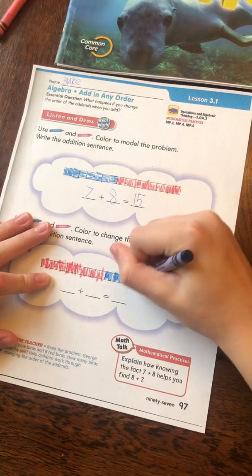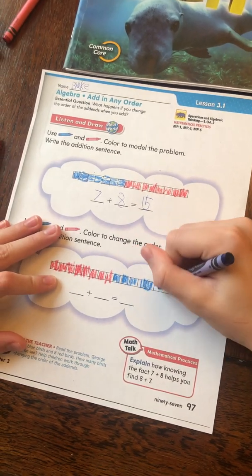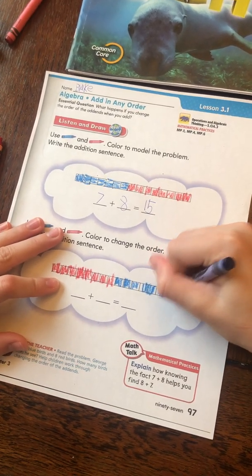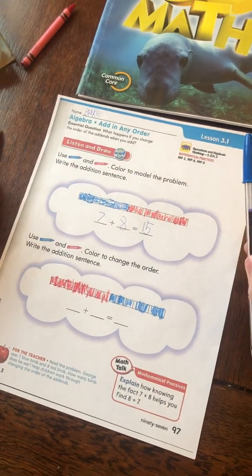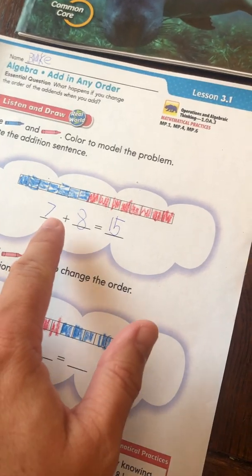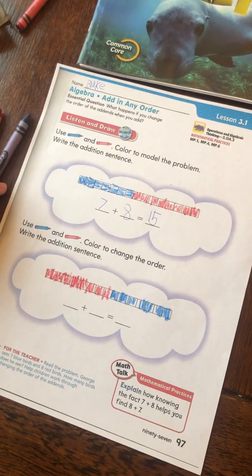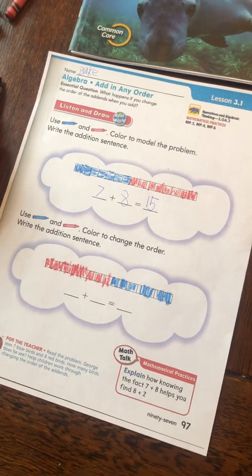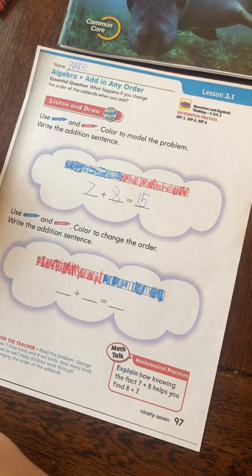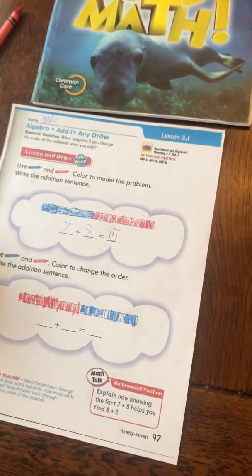Then we color the blue blocks. One, two, three, four, five, six, seven. Okay. So, if we wrote... Oh, that's going to change the answer, because right here, it's 7 plus 8, and now it's going to be 8 plus 7. It's going to be something different, right? No. Because you're still adding 8 plus 7. But I changed the order. Well, write it out. Let's see.